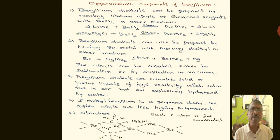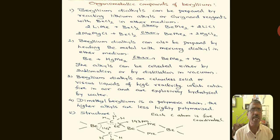Beryllium dialkyls can also be prepared by heating beryllium metal with mercury dialkyls in ether medium. When beryllium metal is heated with dimethyl mercury, we get dimethyl beryllium and mercury. The alkyls can be collected either by sublimation or by distillation in vacuum.